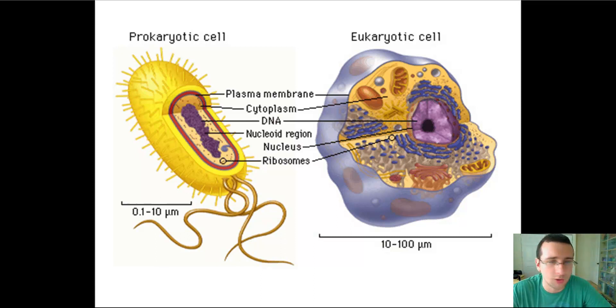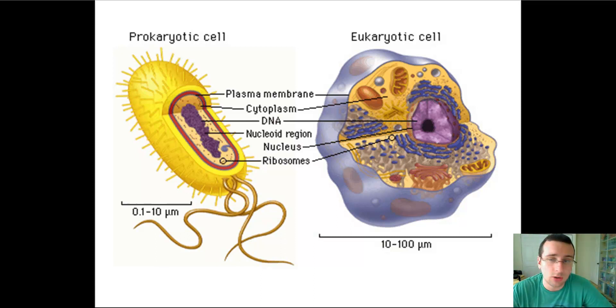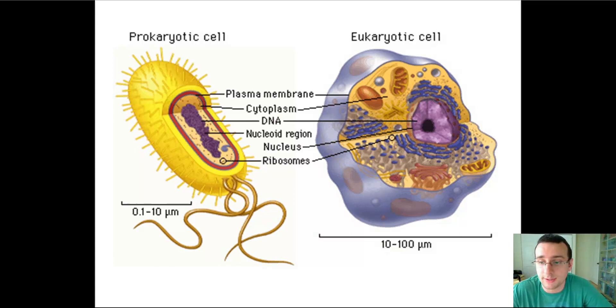Ribosomes will also be different in prokaryotes than in eukaryotic cells. The ribosomal RNA — or the genetic code of the ribosomes — is different between the two. It's actually something you can use to differentiate between prokaryotic cells and eukaryotic cells.